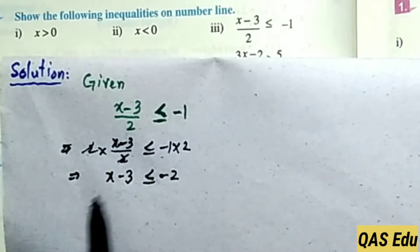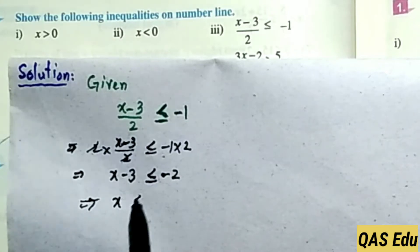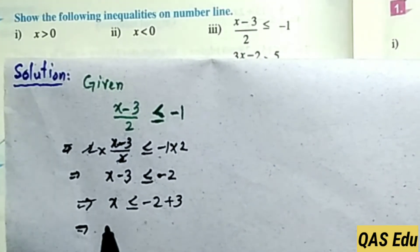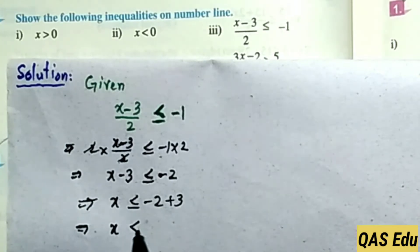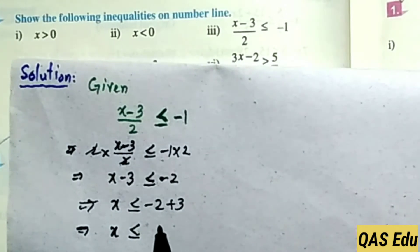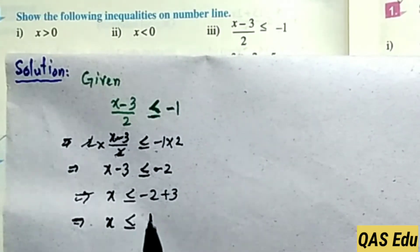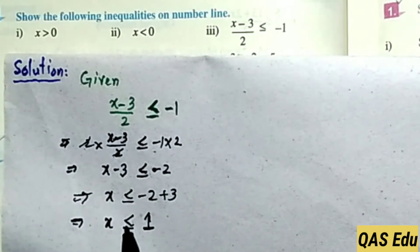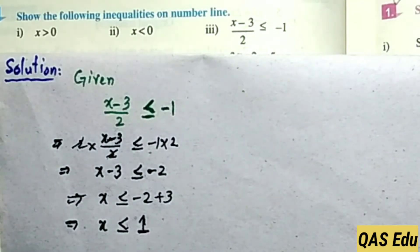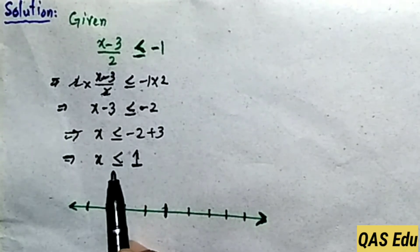Move minus 3 to the right side as plus 3. Then x is on its own. The result is x is less than or equal to minus 2 plus 3. Minus plus gives minus, so 3 minus 2 gives 1. Therefore x is less than or equal to 1.